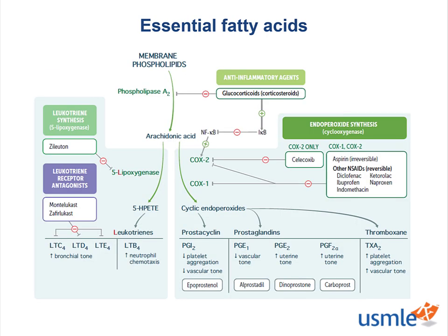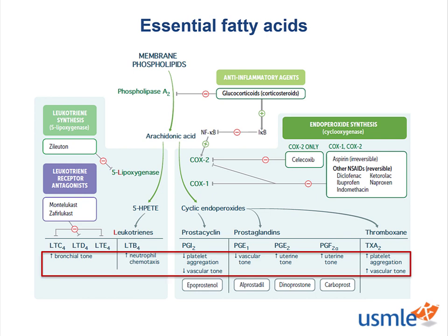So why does this matter? When we think of bronchial, vascular, and uterine tone, neutrophil chemotaxis in our inflammatory response, and platelet aggregation — to name the highest yield clinical effects — these are all from the production of leukotrienes and prostaglandins, including prostacyclin and thromboxane, which are all derived from arachidonic acid. It goes without saying just how critical these processes are, and why these fatty acids are, indeed, essential.